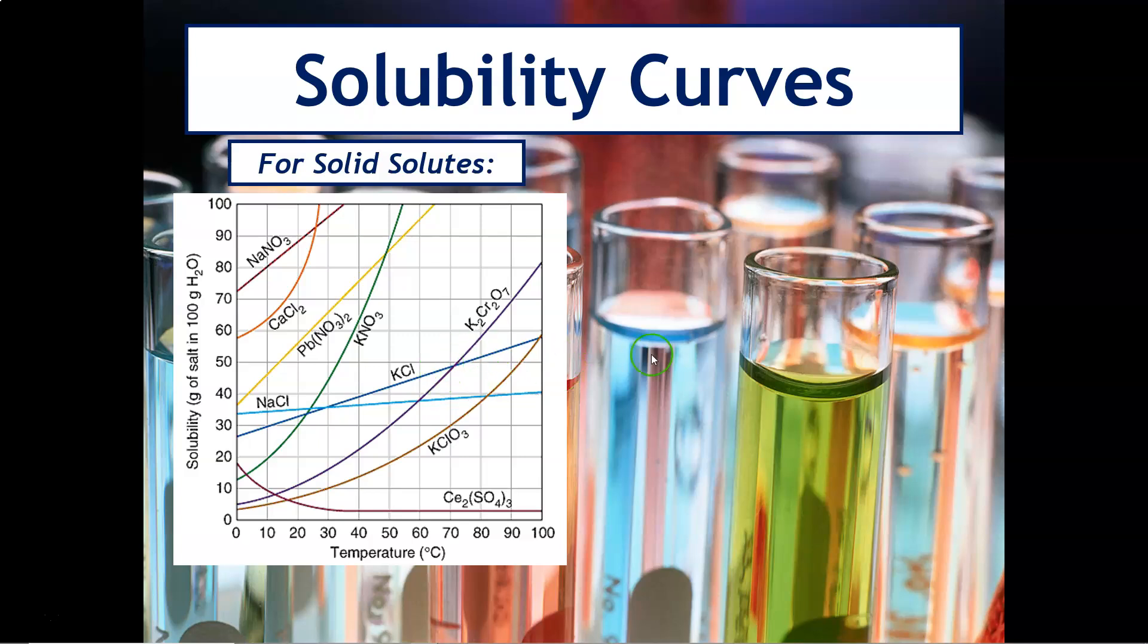So if you're talking about a data point that's on the line of the curve, like in this case for potassium dichromate, then you would say that that solution is saturated. If, for example, I said to you at 50 degrees Celsius we added 20 grams of the potassium dichromate, then that would tell you that the solution is unsaturated. So that's how you use these solubility curves to tell you.